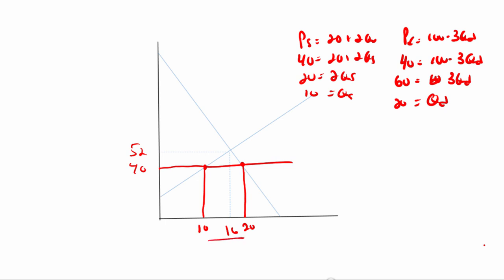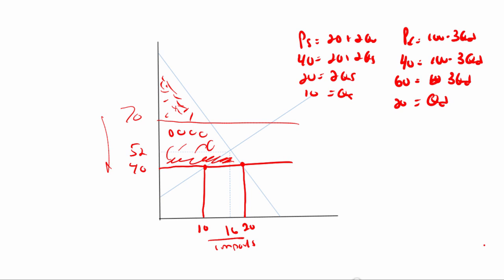The question is what has happened to consumer surplus. Comparing to the previous world price of $70, consumers were getting a smaller area of consumer surplus. Now with price at $40, that whole larger area represents the increase in consumer surplus. The answer is B: the country imports 10 units and consumer surplus has to rise. That is number 16.